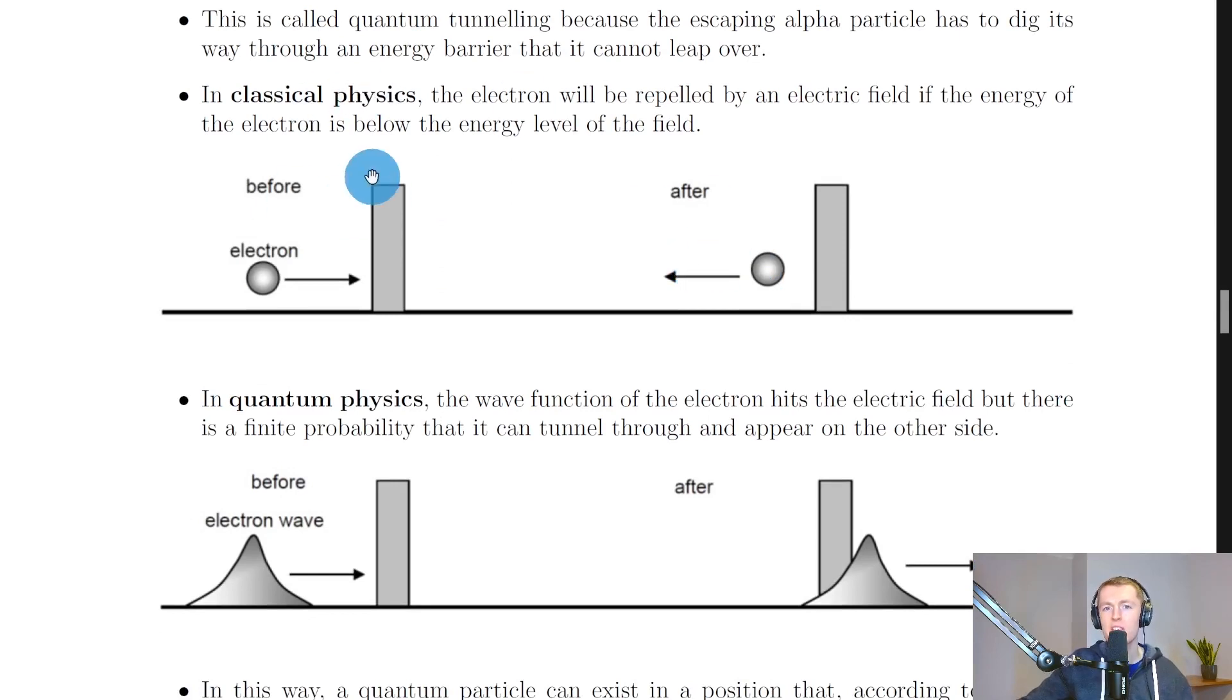First of all we're going to look at classical physics and then compare that to quantum physics. In classical physics, let's say we've got a potential energy barrier here with an electron approaching it. The electron will be repelled by an electric field if the energy of the electron is below the energy level of the field.